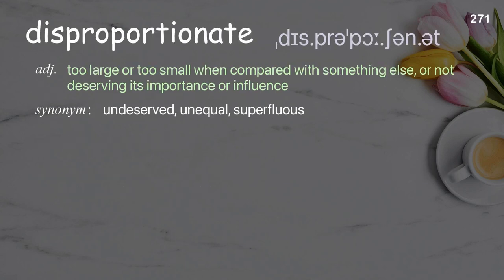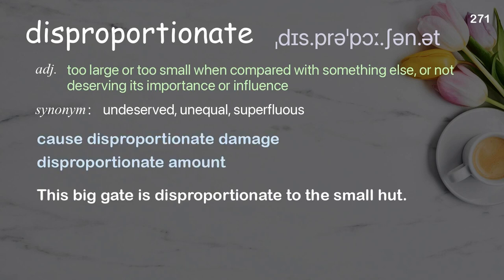Disproportionate: too large or too small when compared with something else; or not deserving its importance or influence. Examples: cause disproportionate damage; disproportionate amount. This big gate is disproportionate to the small hut.